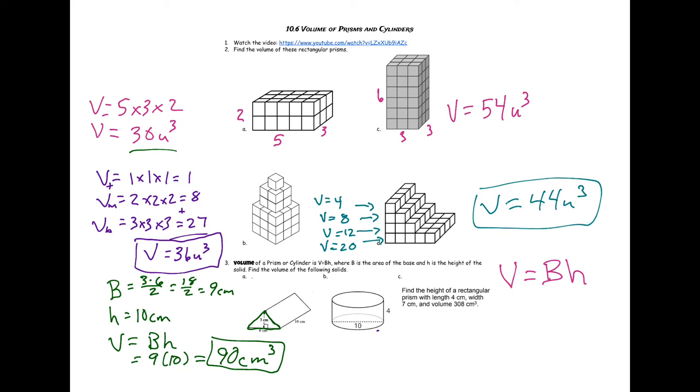All right, C: Find the height of a rectangular prism with length 4 centimeters, width 7 centimeters, and volume 308 centimeters cubed. So this one's a little bit different - you're given the volume and you're trying to find the h, the height of the solid. We do need to calculate our B. Our B is going to be the area of the rectangle - to do that, you're going to do length times width. So four times seven to get an answer of 28. So we know what our area of the base is, we know what our volume is. Now we have to find our h.